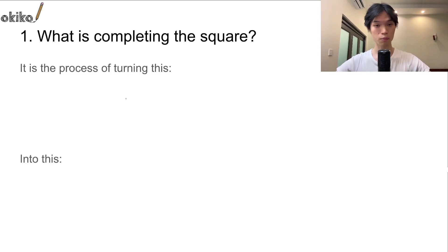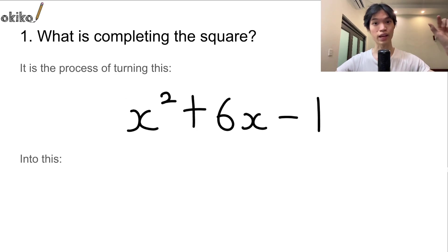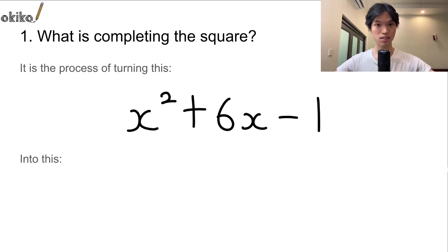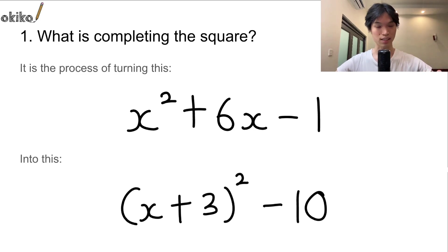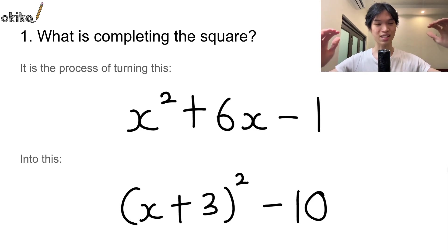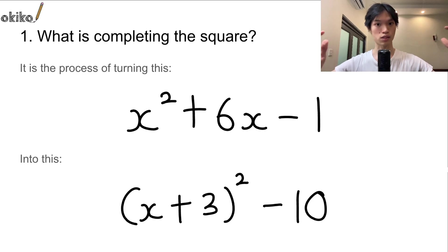So let's talk about number one: what is completing the square? Well, it is just a process of turning an expression like that on screen — that is called a quadratic expression, because you see the x with a power of 2 — and it turns into an expression that looks like this. You notice how there is an x with something else, the plus 3, inside the bracket, and the bracket is the thing that's being squared.